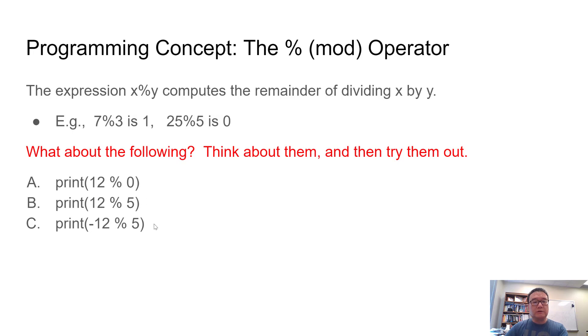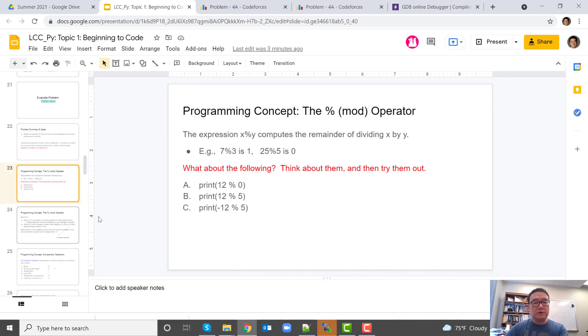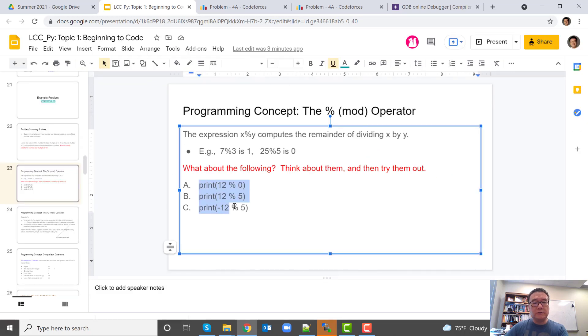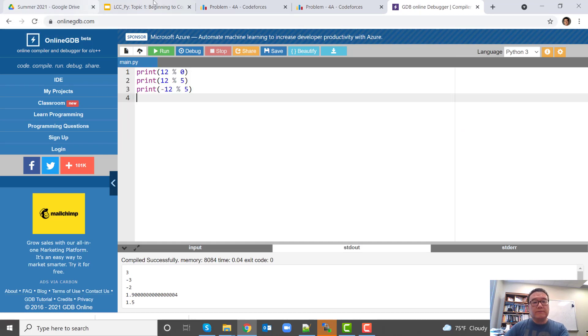I want you to think about what will the following three lines output. I suggest you to think about it, and then type them into your Python interpreter, and then see whether your conjectures are correct. We're actually going to do that on online GDB. So we copy that.